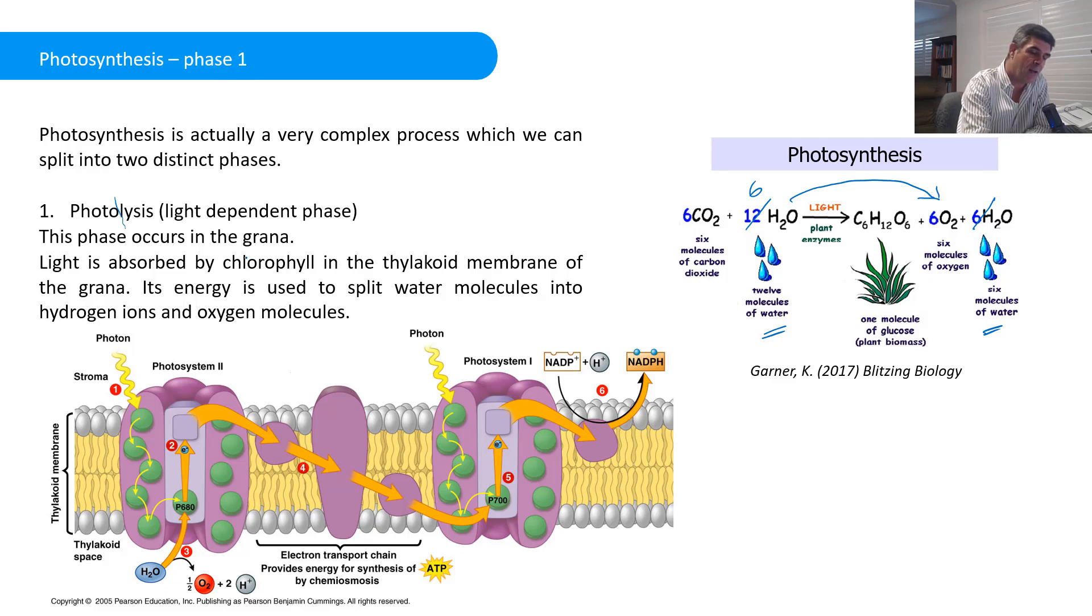This occurs in the grana of the chloroplasts and specifically in the little stacks of thylakoid membranes that contain chlorophyll. It's the chlorophyll that absorbs that energy, takes in the light energy, and uses that energy to split the water molecules into hydrogen ions and oxygen molecules.